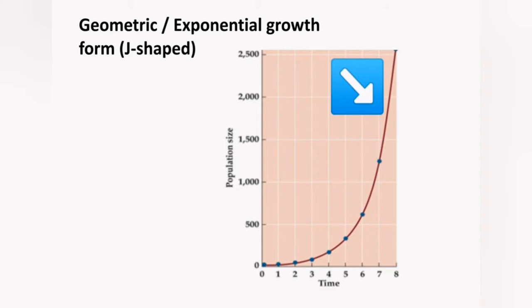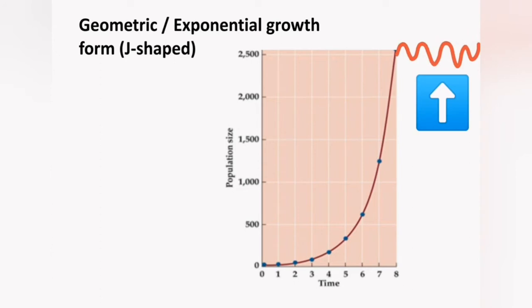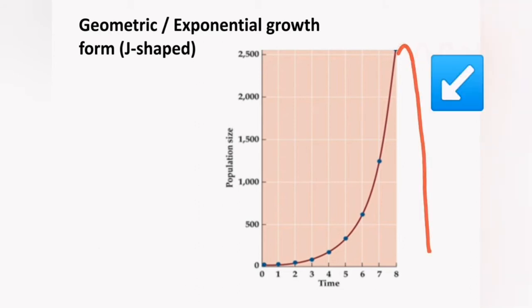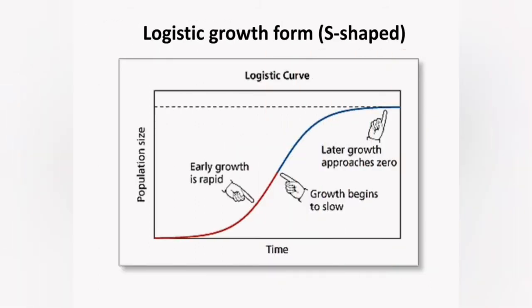After this rapid increase, the population will either reach equilibrium — as we saw with the population of zebra on DJ's farm — or it will crash all the way down. Especially for bacteria in a closed container, they will run out of food and population numbers will drop dramatically. The second growth curve is the S-shaped one.